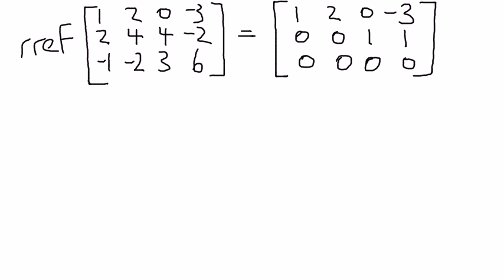So here we have the reduced row echelon form of the original augmented matrix on the right here. And you can see, you can mark out the pivots here and here. And that means that the rank of this matrix is 2. The rank is 2.